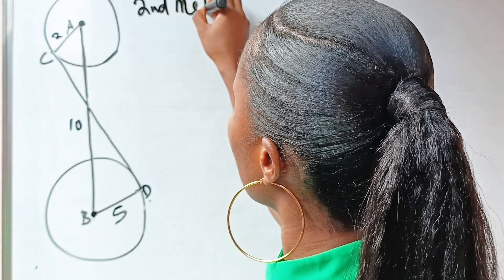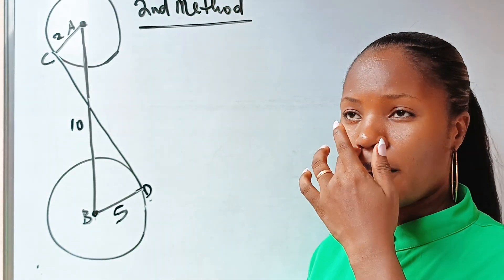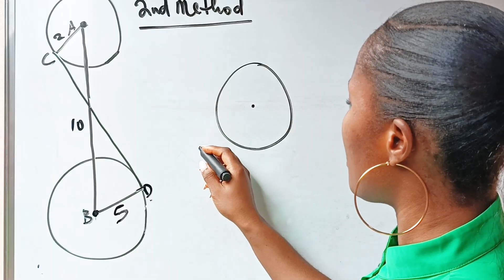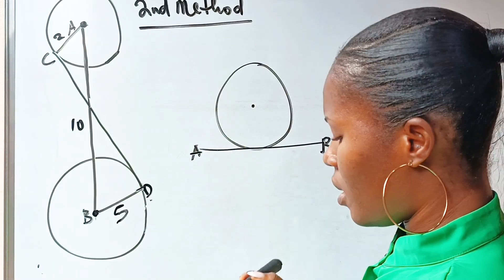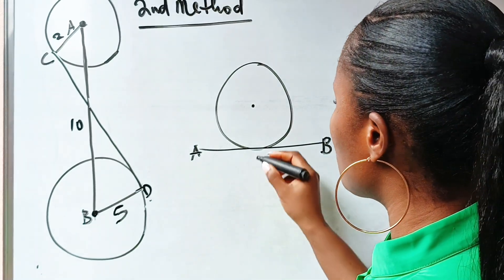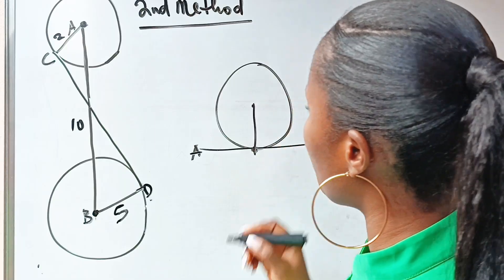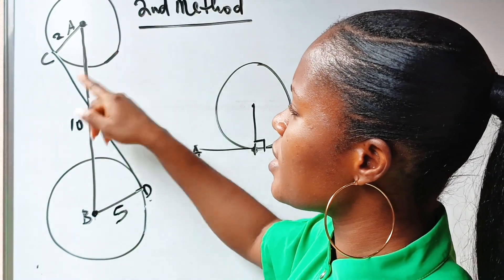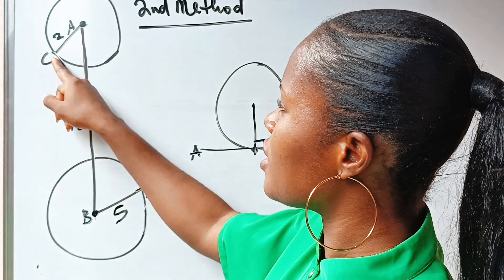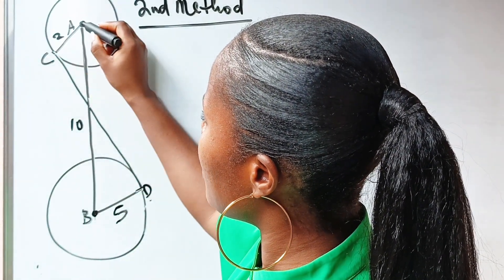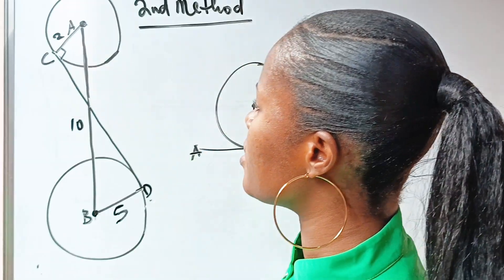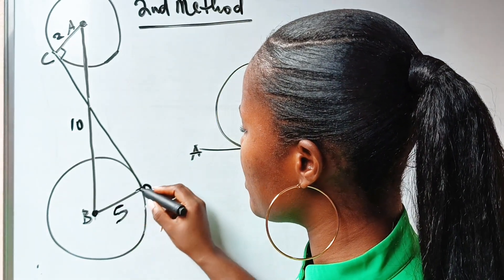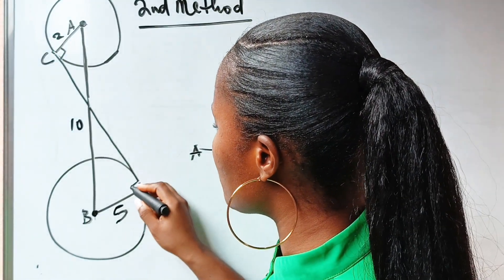Now remember that in a circle of center O, if you have a tangent AB and you draw a straight line from the center of the circle to the point of contact between this tangent and the circle, you are going to form 90 degrees. Looking at this diagram, CD is a tangent at a point to this circle center A, so this angle is 90 degrees. Similarly, the other tangent also forms 90 degrees with the line from the center.